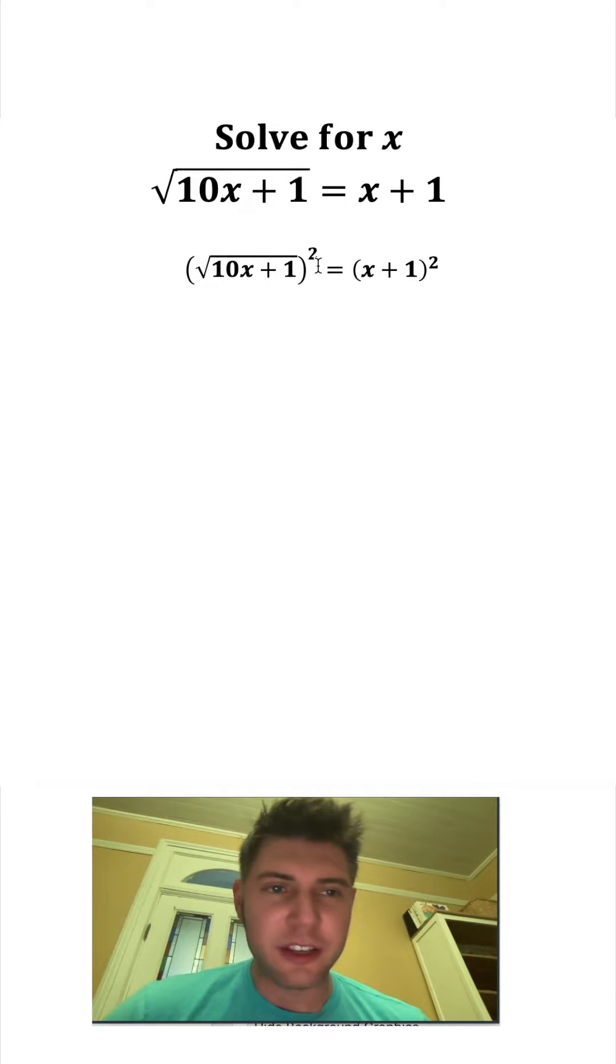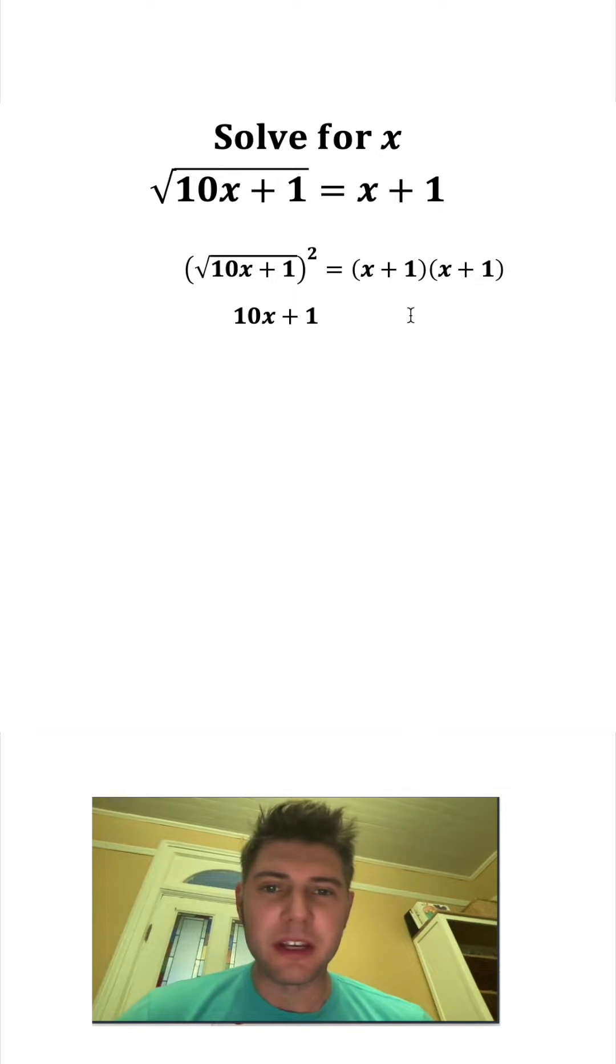This square root and the square cancel each other out, giving us just 10x plus 1. This x plus 1 squared is the same thing as x plus 1 times x plus 1, so we have to foil this out.